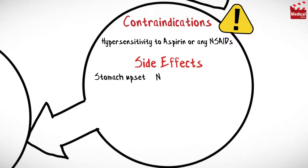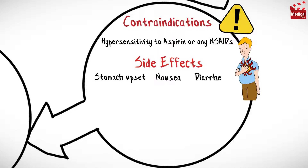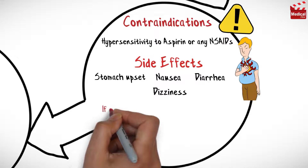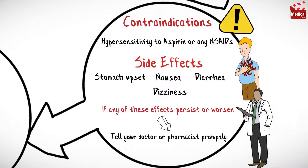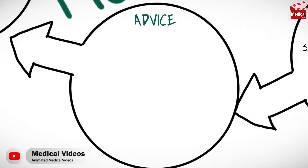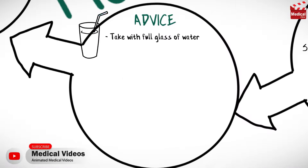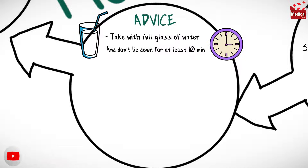Adverse reactions of meloxicam include stomach upset and nausea, diarrhea, and dizziness. If any of these effects persist or worsen, tell your doctor or pharmacist promptly. Take meloxicam with a full glass of water and don't lie down for at least 10 minutes after taking it.